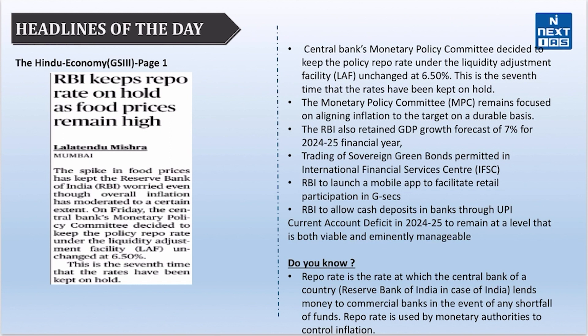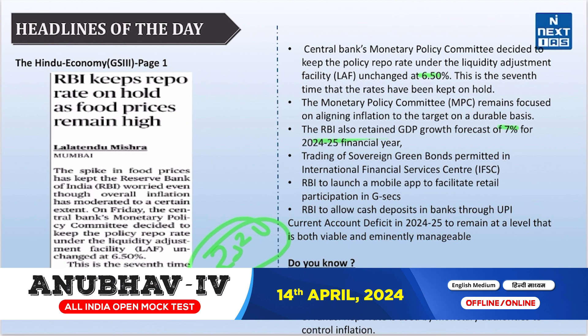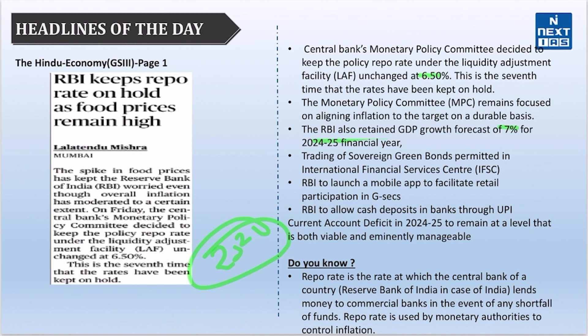Recently, the Reserve Bank of India decided to keep the Repo rate unchanged at 6.5%, and RBI also retained a GDP growth forecast of 7% for the 2024–2025 financial year. Other key highlights include: trading of sovereign green bonds permitted in the International Financial Service Centre; RBI decided to introduce a mobile app for its Retail Direct scheme, introduced in 2021, which gives individual investors access to gilt accounts with RBI to invest in government securities; and RBI proposed to enable the Unified Payment Interface for cash deposits, considering the app's popularity and convenience.